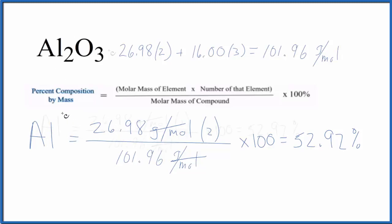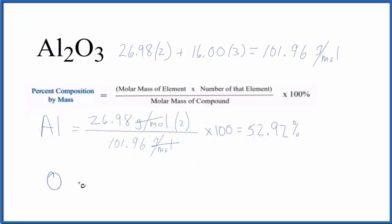We do the same process for the oxygen. We take the molar mass for the oxygen. That's the 16.00 from the periodic table. We have three of those. Multiply it by 3. Divide by the molar mass of the compound. That's this number here. And I won't write the units since they'll cancel out.